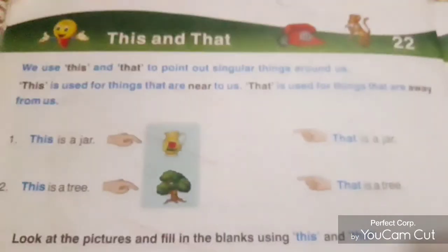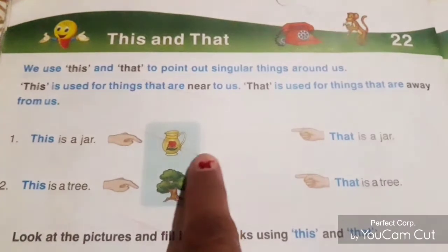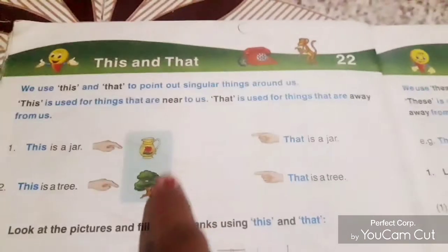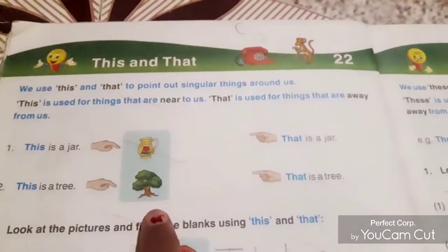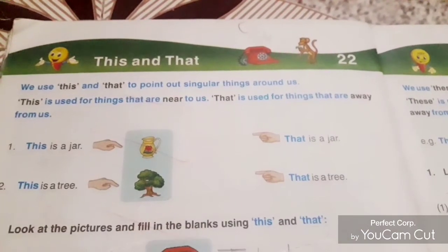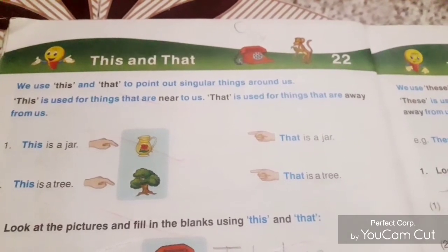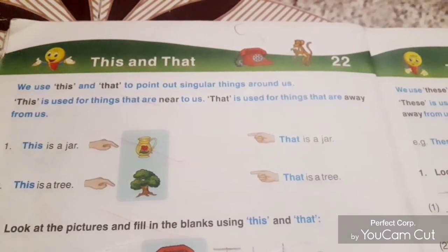Look at here. This is a jar. A picture of one jar and a picture of one tree is only given. So, by the picture, we know that we are talking only about singular things.